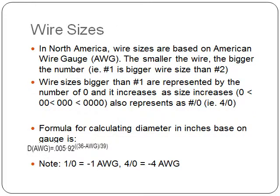Let's talk about wire sizes. In North America, wire sizes are based on American Wire Gauge, or AWG. The smaller the wire, the bigger the number — so number one is a bigger wire size than number two. Wire sizes bigger than number one are represented by the number of zeros, and the count increases as size increases: zero is smaller than double zero, which is smaller than triple zero, and so on. This is more commonly called 'aught,' so one zero is called one-aught, two zeros is called two-aught, and it can also be written in the form number-slash-zero.